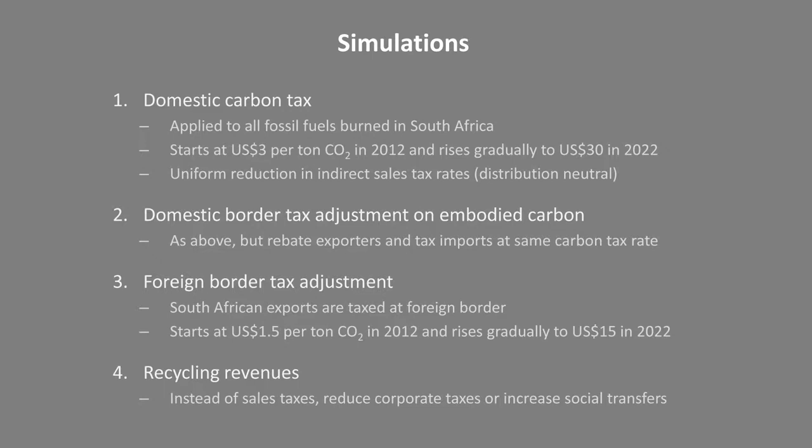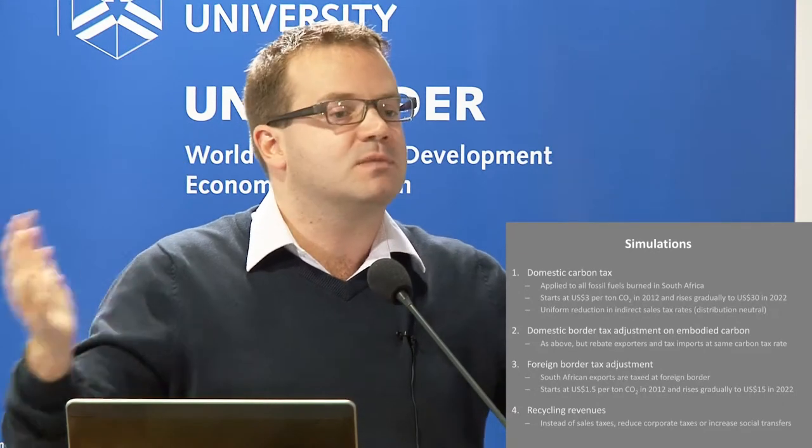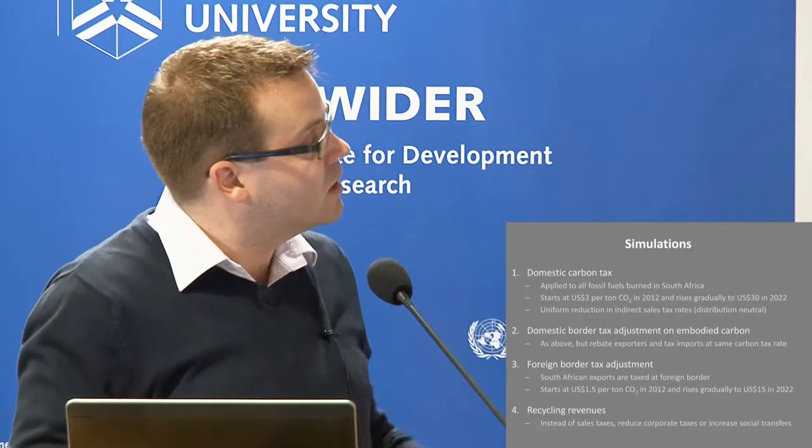We're going to run a number of scenarios. The most obvious one is the impact of a domestic carbon tax. We apply this carbon tax at the point at which fossil fuels enter the economy — it's a tax on fossil fuels. It's going to start at $3 per ton in 2012 and gradually rise to $30 per ton by 2022. A very important part of the story about carbon taxes is what happens to the tax revenues collected — how are they going to be recycled back into the system? We start with a basic scenario by recycling revenues back into the economy by reducing sales taxes uniformly — a neutral adjustment where everybody buying goods in the economy benefits.